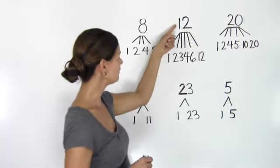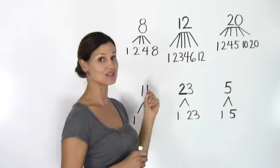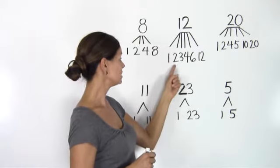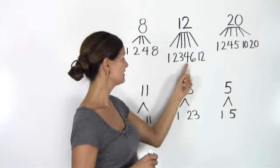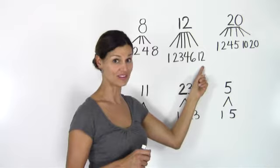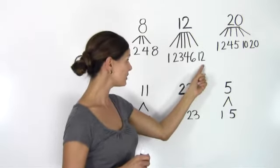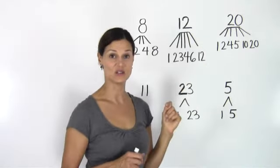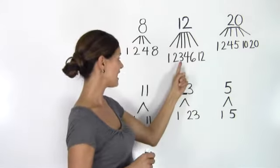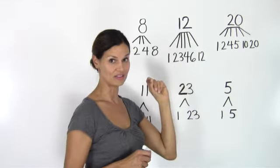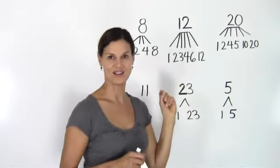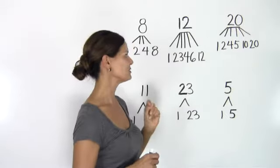Let's look at 12. 12 has quite a few factors: 1, 2, 3, 4, 6, and 12. Each of these whole numbers can divide evenly into 12. We can also see that 3 times 4 equals 12, 2 times 6 equals 12, 12 times 1 equals 12.